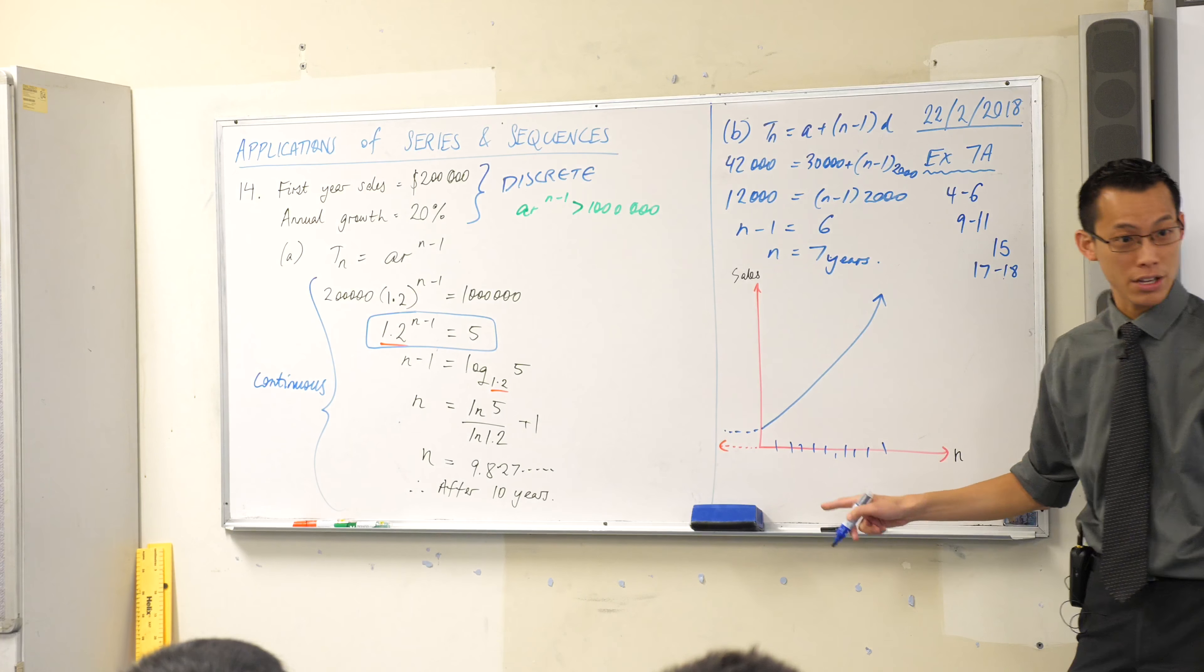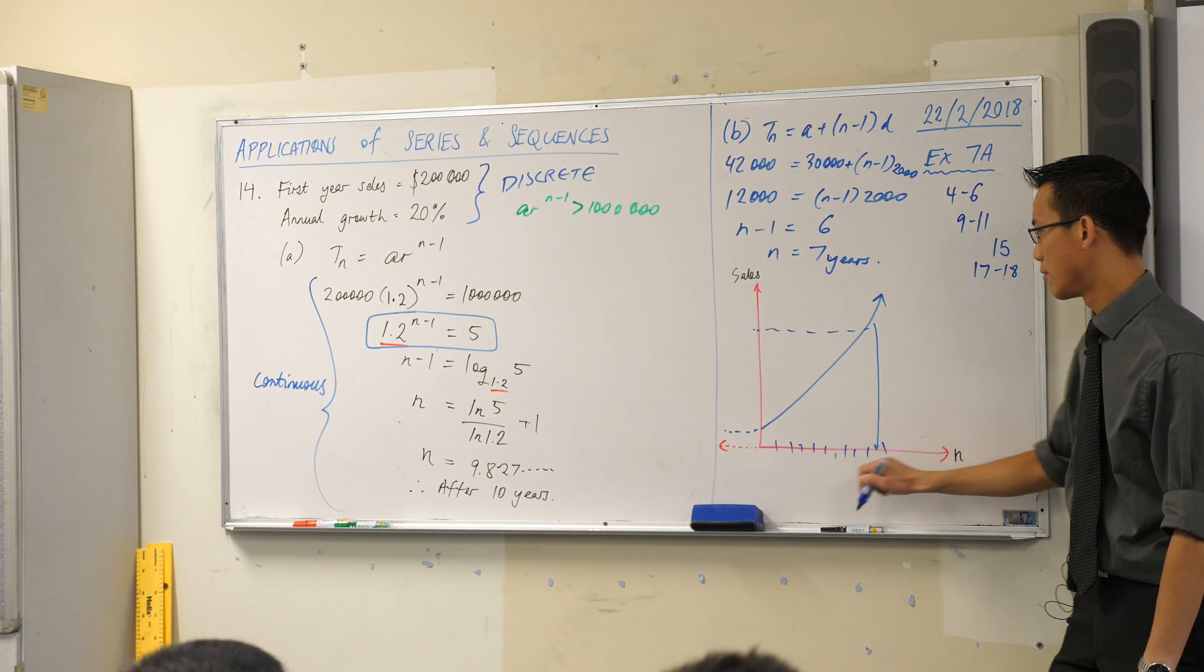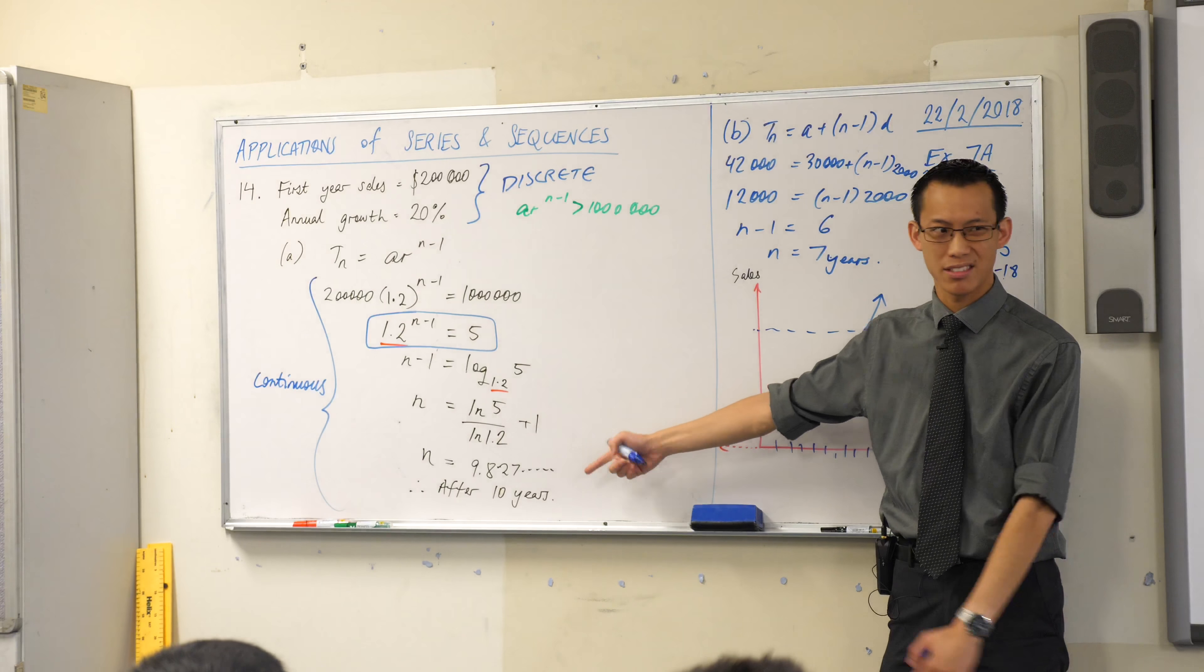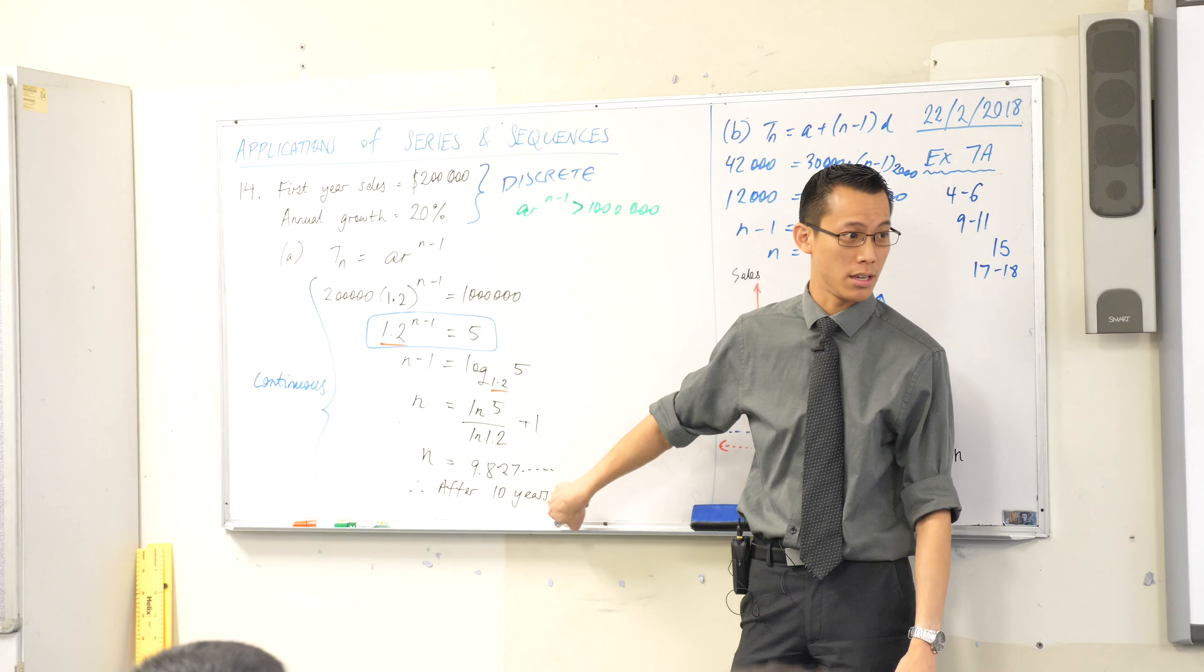If you looked for a million dollars, it would be between, at 9.827, but there is no such year, and that's why I use this number, and I go to the next year. Does that make sense?